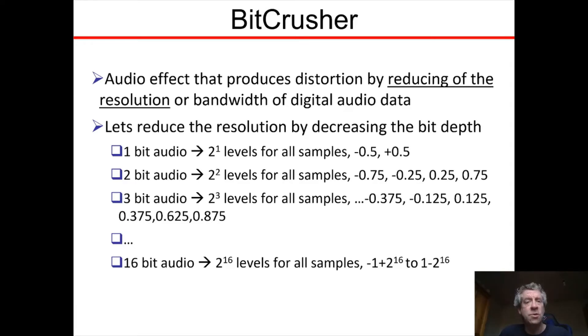This type of audio effect produces distortion by, for a fully fledged BitCrusher, usually reducing the resolution and the bandwidth, the frequency range of the digital audio data, but that's really affecting sampling rate. We're going to stick to reducing the resolution, and we do that by decreasing the bit depth, as if the audio was encoded using only 4 bits or 5 bits or some smaller amount of bits than the actual encoding.